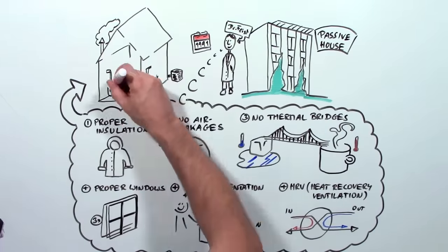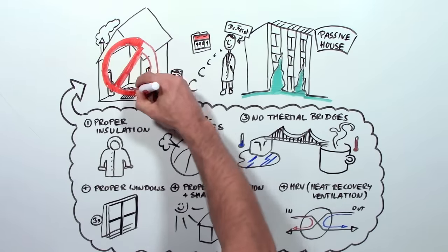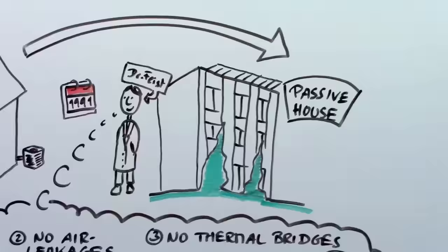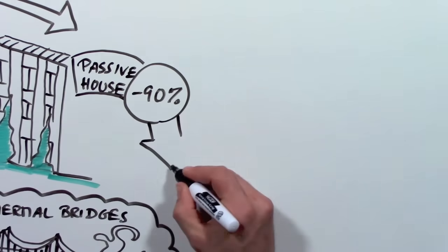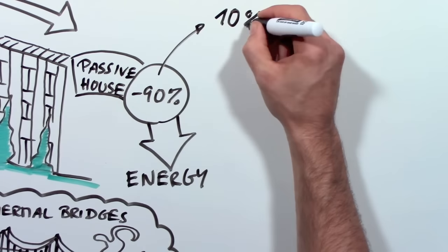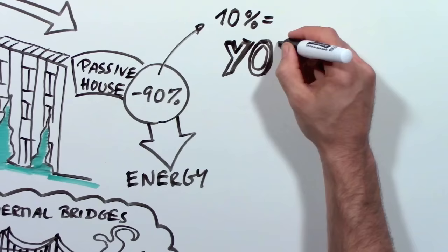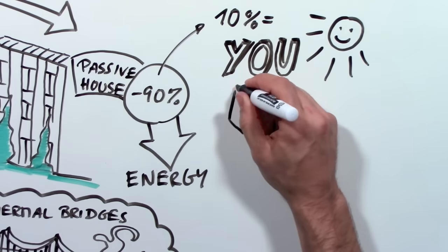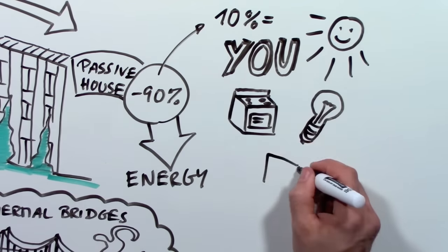Add all these things up and it turns out your house doesn't need a heater or air conditioner. So where does the heat come from? A passive house needs 90% less energy and that can easily be supplied by your body heat, the sun, your appliances, light bulbs and even your TV.